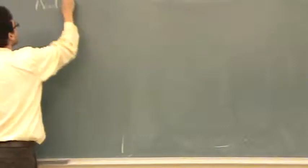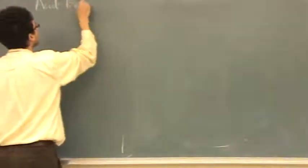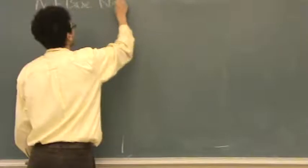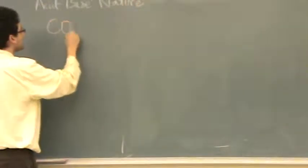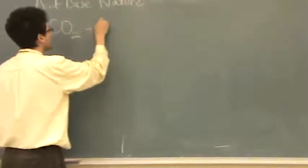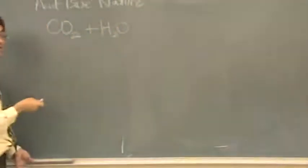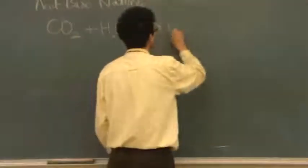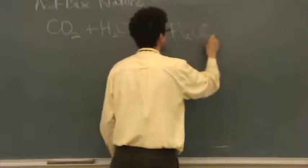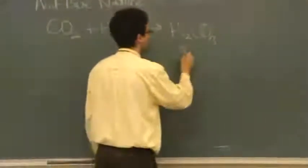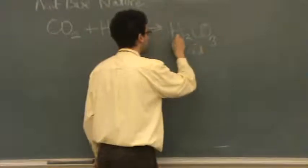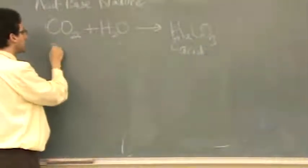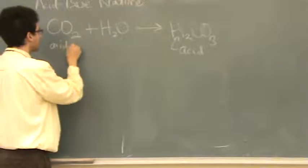Okay, the acid-base nature. So let's say you have CO2. The template is that you're putting this in water and seeing what happens. Well, in this case, this will go to H2CO3. That is an acid. I know that because there's a hydrogen in front, so we call this an acidic oxide.